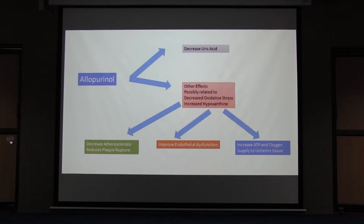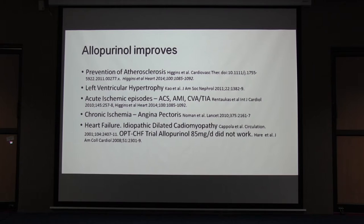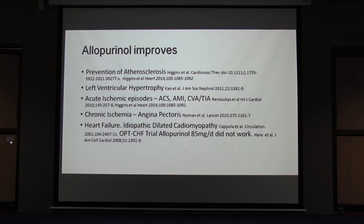It seems it is not the uric acid itself which is the culprit, but the oxygen radicals and oxidative stress occurring during the formation of uric acid. Allopurinol improves atherosclerosis, left ventricular hypertrophy, reduces acute and chronic ischemic episodes, heart failure, and idiopathic dilated cardiomyopathy. However, in the OPT-CHF trial no effect was found, possibly because only 85 mg/day was used rather than 300 mg/day, which would have been more effective.